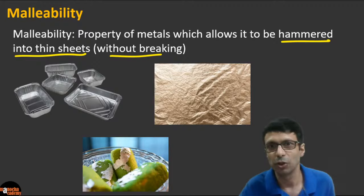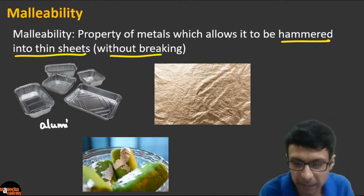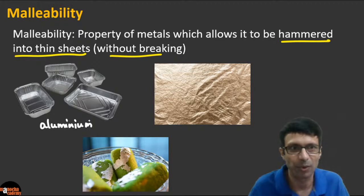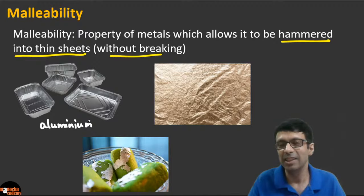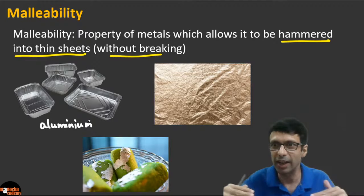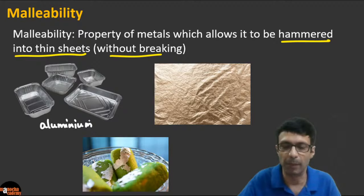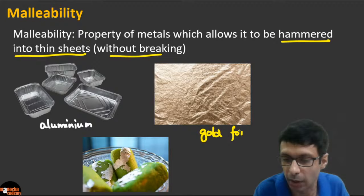An example is aluminium — you've heard of aluminium foils used in the kitchen, or food containers made of aluminium. Aluminium can be beaten and hammered into thin sheets without breaking. That is the meaning of malleability.